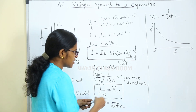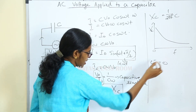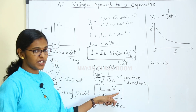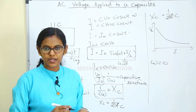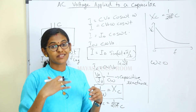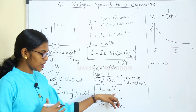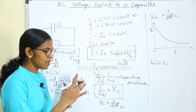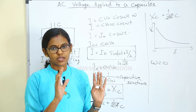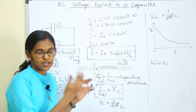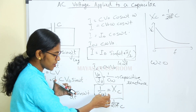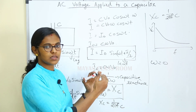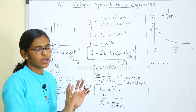In the case of DC, ω equals 0. If we look at the value of Xc at ω equals 0, we get an infinite value of capacitive reactance — that means infinite resistance. So DC is blocked by the capacitor.